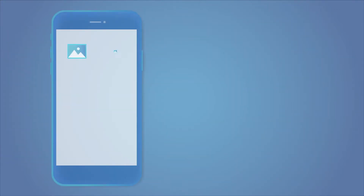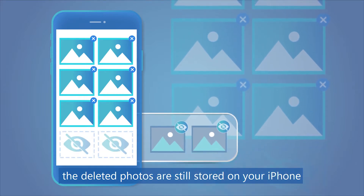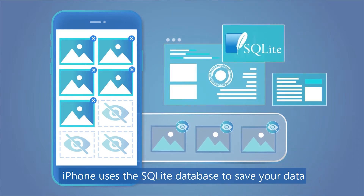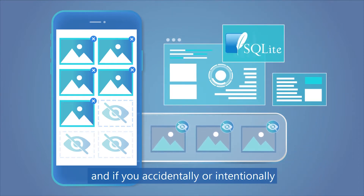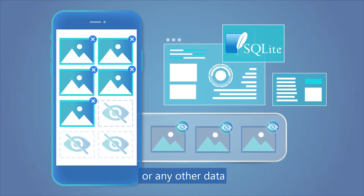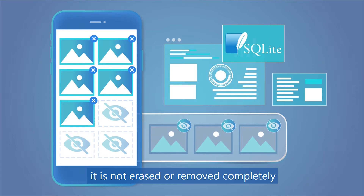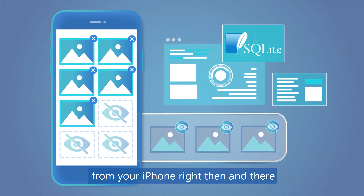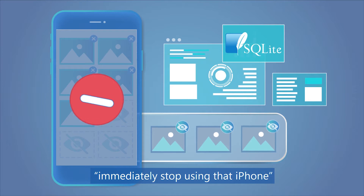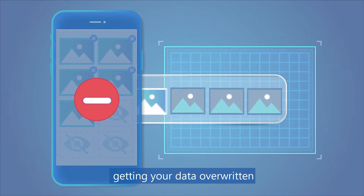Keep watching to find out. Actually, the deleted photos are still stored on your iPhone. iPhone uses the SQLite database to save your data, and if you accidentally or intentionally delete some of your photos, videos, or any other data, it is not erased or removed completely from your iPhone right then and there. The very first thing to do is to immediately stop using that iPhone — this will reduce the chance of getting your data overwritten.